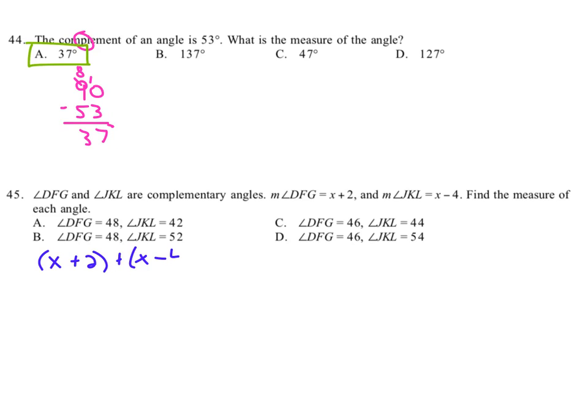Since they are complementary, they need to add together to be equal to 90. So when we do the math, we combine like terms, 2X, combine like terms, 2 plus negative 4, negative 2 equals 90.